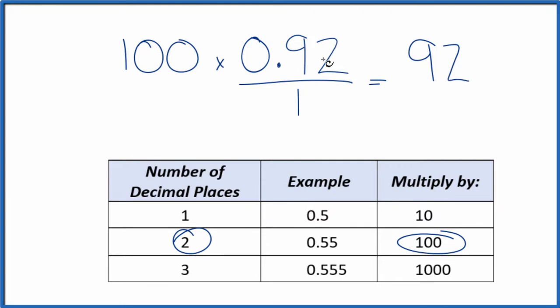But I can't just multiply the numerator by 100. I also have to multiply the denominator by 100. That's because 100 divided by 100 equals 1. So we're just multiplying by 1. We don't change the value, just the way it's written.